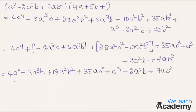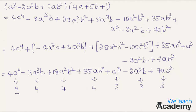Now let us find the degree of this expression. The degree of the first term is 4, second term is 4, third term is 4, and the fourth term is 4. However, the degree of a cubed is 3, the degree of minus 2a squared b is 3, and the degree of 7ab squared is 3. Since all terms of the expression have different degrees, we call this expression a non-homogeneous expression.